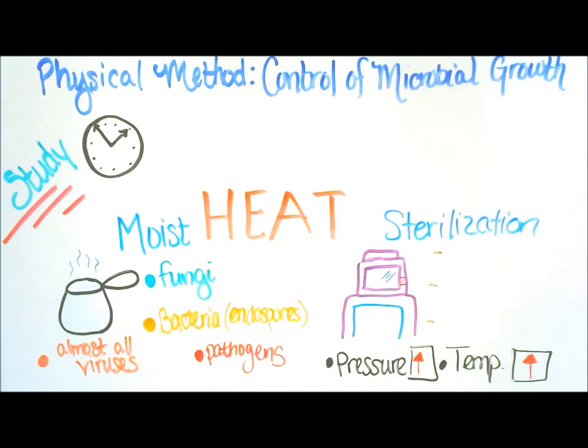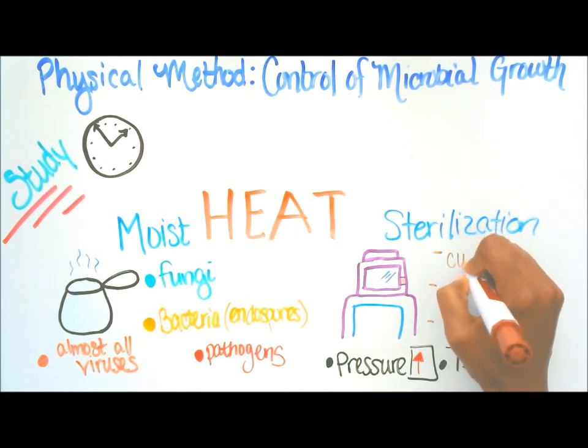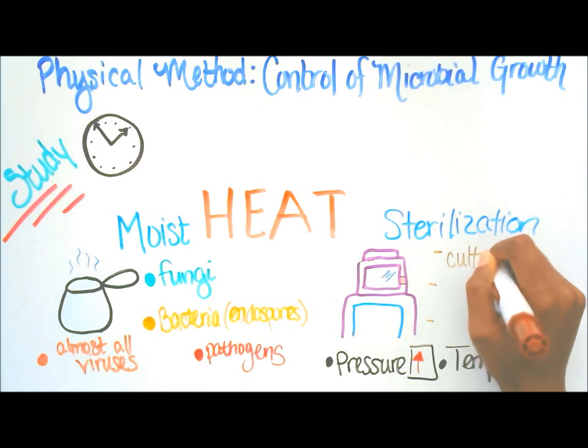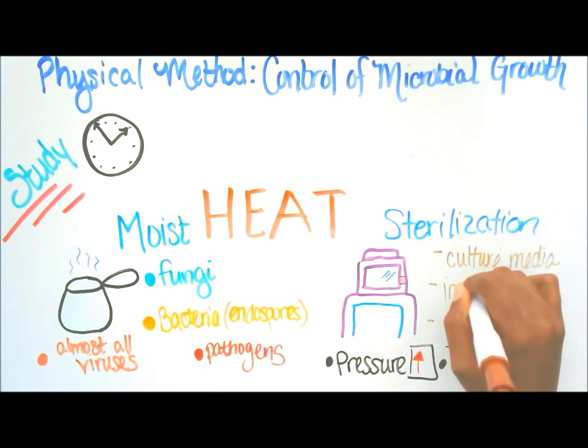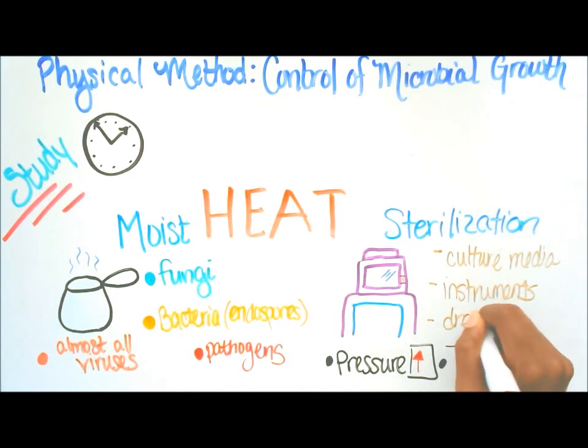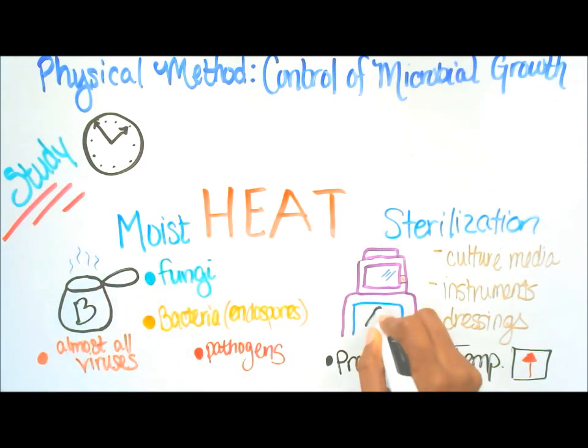Now things that can be sterilized using autoclaves: three points. I have culture, media, instruments, and dressings. And this is moist heat sterilization or two examples. Let's put boiling, B for boiling, and A for autoclave.